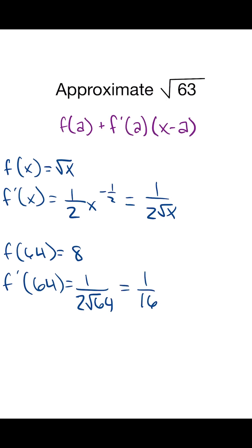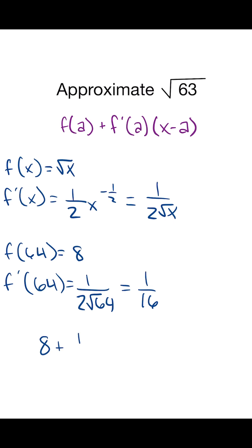Now plugging that into our function, we get eight plus one over sixteen times 63 minus 64, and this gives us seven and fifteen sixteenths.